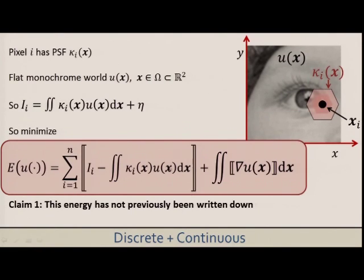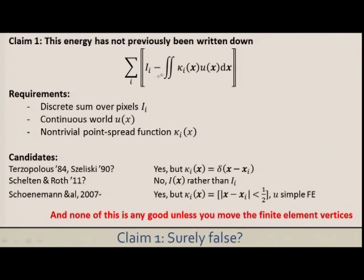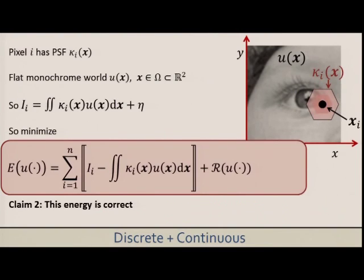So now it's very easy and obvious how you write down the functional that you want to minimize. Each of my n discrete samples was explained by taking my continuous domain function, multiplying it by some point spread function. It doesn't matter if it's the same at every pixel or different. I want to minimize the difference between my sample and the prediction under the model, plus some prior. This is still a rotationally invariant prior. I'm minimizing over a continuous function u. And I'm claiming that we have never actually written down this self-evidently correct formulation before in computer vision.